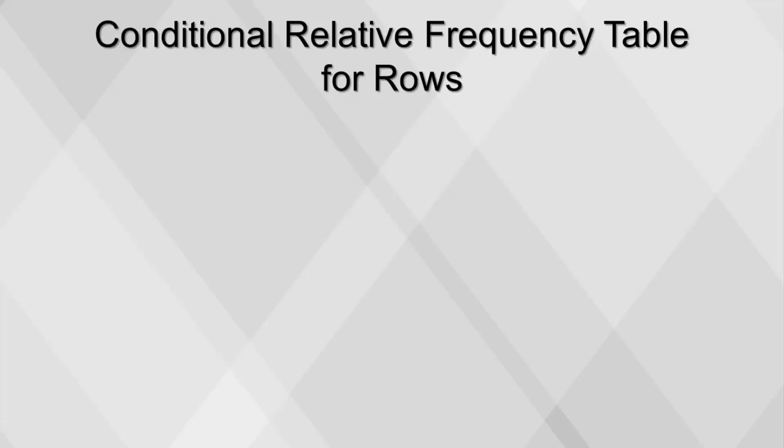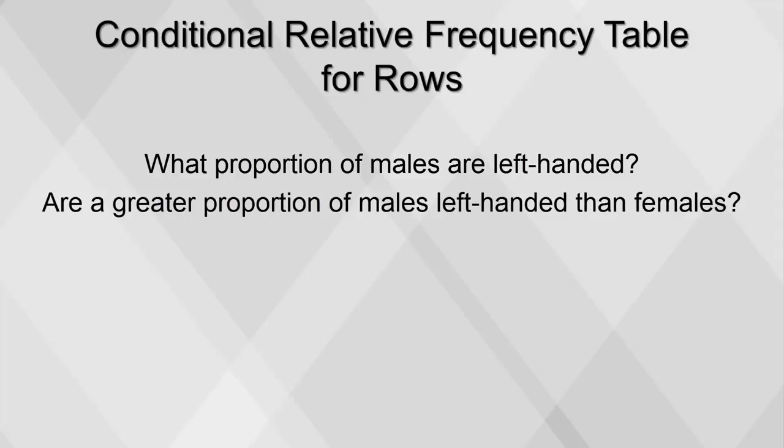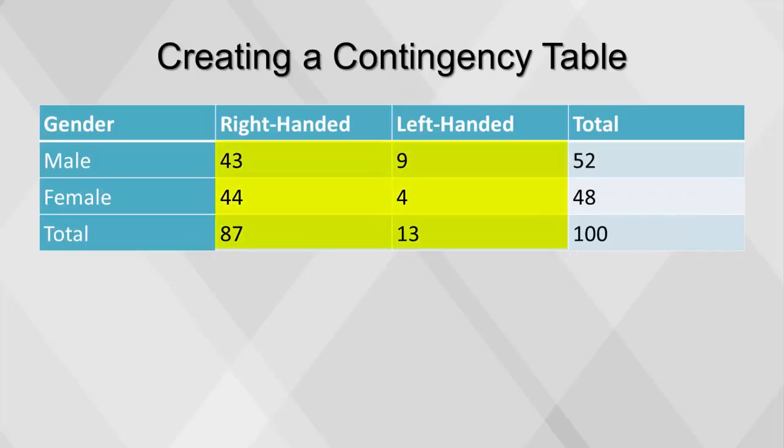There are other questions, however, that are harder to answer, and these deal with the proportions of each combination. What proportion or percent of males are left-handed? And are a greater proportion of males left-handed than the proportion of females? For these questions, the proportion of gender, we need to divide the values in the cells by the totals along the gender axis, which in this case is the vertical axis.